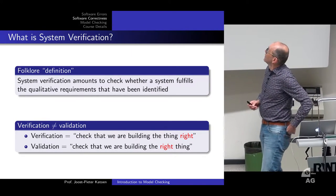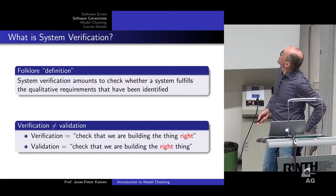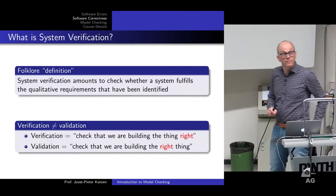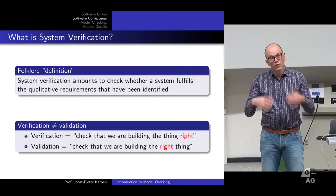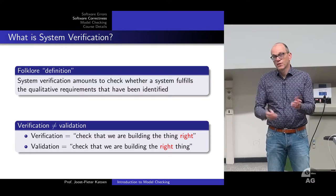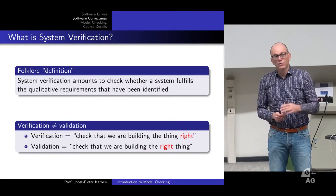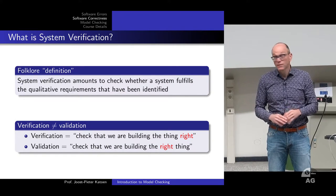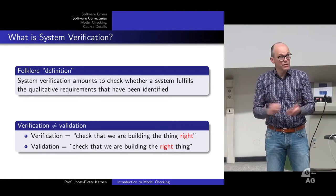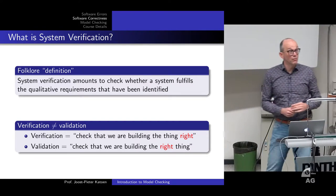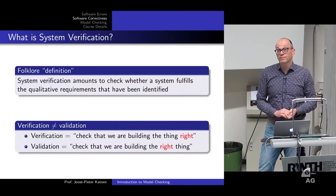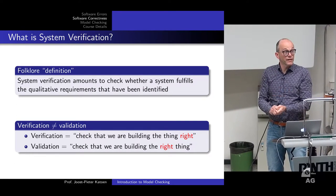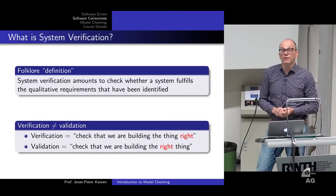What is system verification? The folklore definition: you check whether a system fulfills the requirements that have been identified. Engineers write requirements — typically thick documents in natural language, documents of 100 pages or more — and then based on these, they start building the system. In the end you check whether the system works correctly: does it meet the requirements we started from?